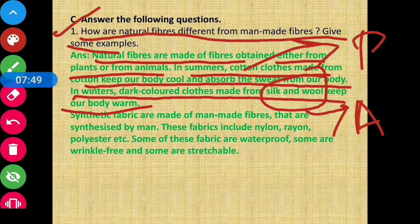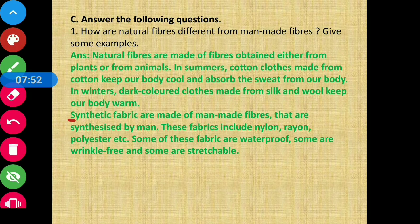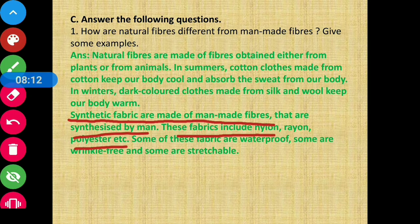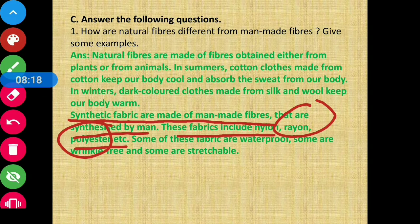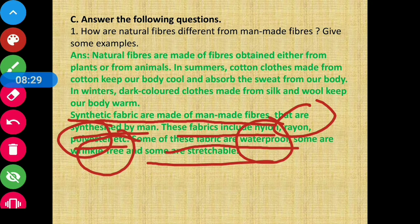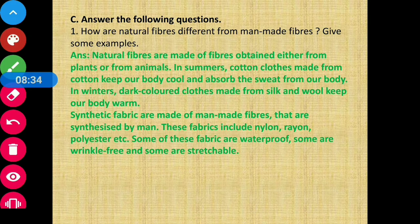Now, synthetic fabrics are made of man-made fibers — they are synthesized by humans. Examples include nylon, rayon, and polyester. Some of these fabrics are waterproof, some are wrinkle-free, and some are stretchable. These are the key differences between natural fibers and man-made fibers.